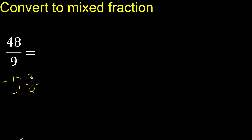This can be simplified because it can be divided by the same number — divided by 3. 3 divided by 3 is 1, and 9 divided by 3 is 3. Finish.